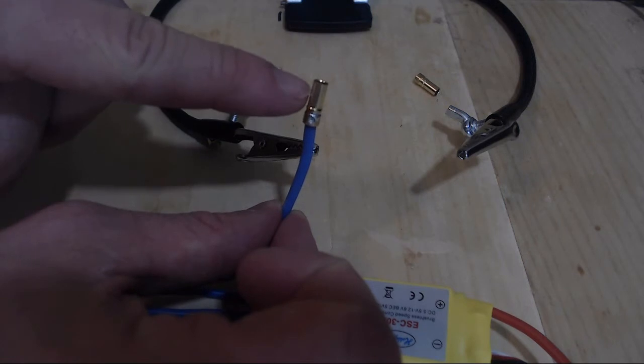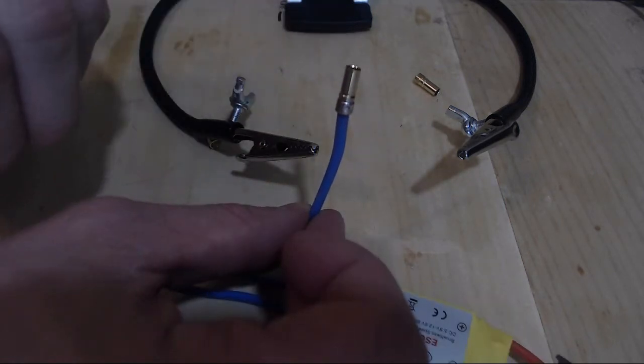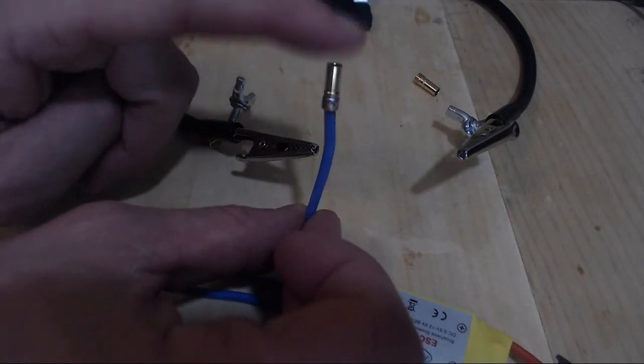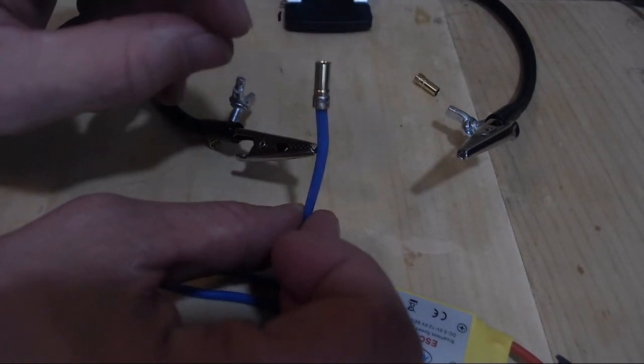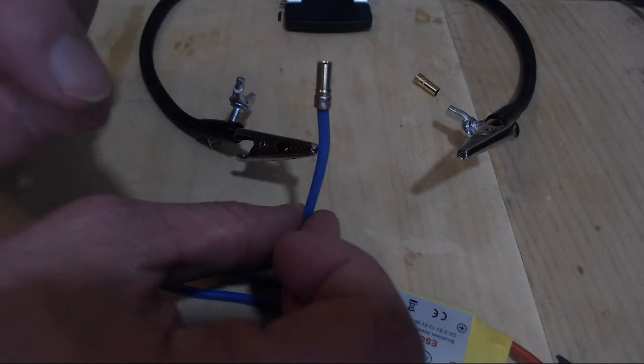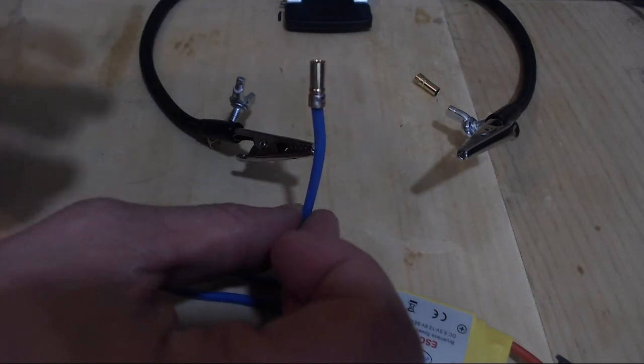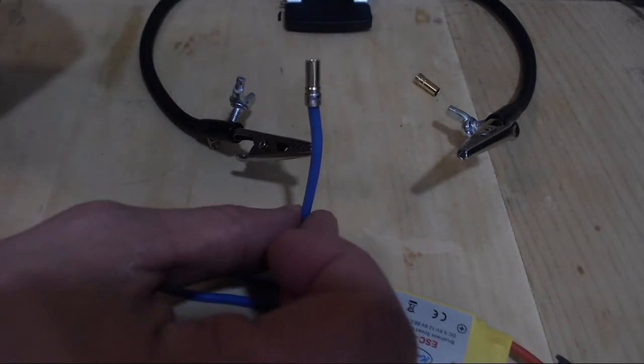And be careful, this bullet connector is still going to be hot. So that procedure we just did for this one bullet connector, we're going to have to do two more times. We're going to have to do that three times for every ESC for a total of 12 times. It could get a little monotonous, but it's a crucial part of the drone build.